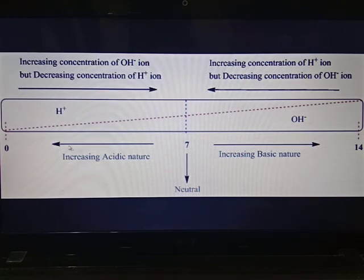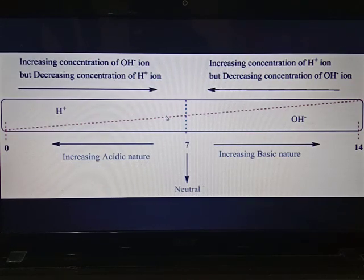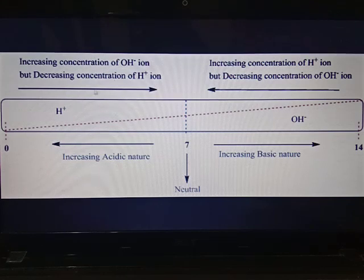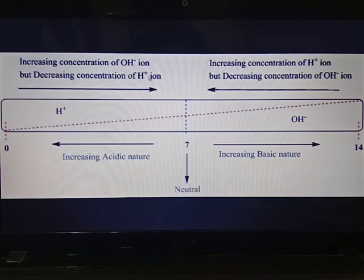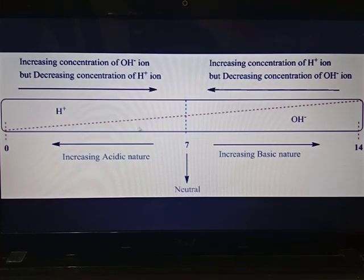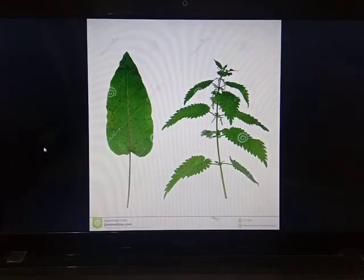If we compare the pH of a solution with hydrogen ion concentration, as the pH increases from 0 to 14, the concentration of H+ ions decreases. You can see the arrow going from 0 towards 7 — as pH increases, H+ ion concentration decreases. Weak acids have less H+ ion concentration than strong acids.